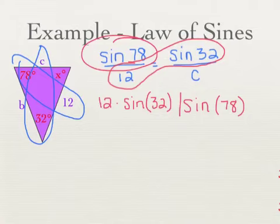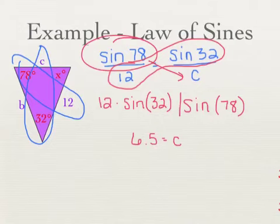You should get about 6.5. And that's equal to C. So 6.5 is my answer for C. For side lengths, I would go to the tenths — one decimal place.